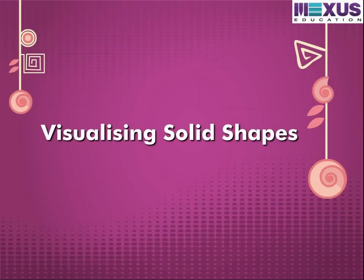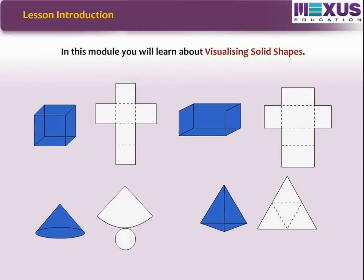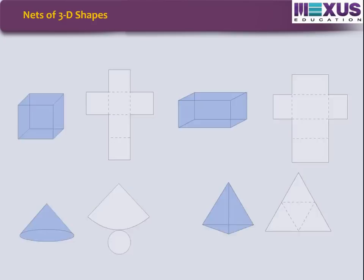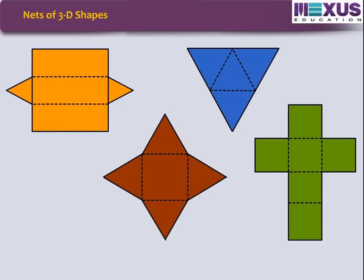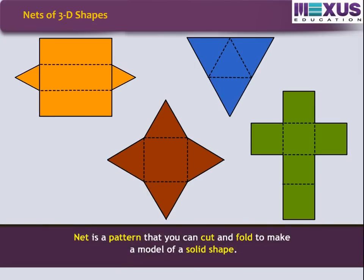Visualizing Solid Shapes. In this module, you will learn about visualizing solid shapes. Can you visualize 3D shapes on a 2D surface, that is on plain paper? Yes, this can be done by drawing the nets of various 3D figures. Net is a pattern that you can cut and fold to make a model of a solid shape.